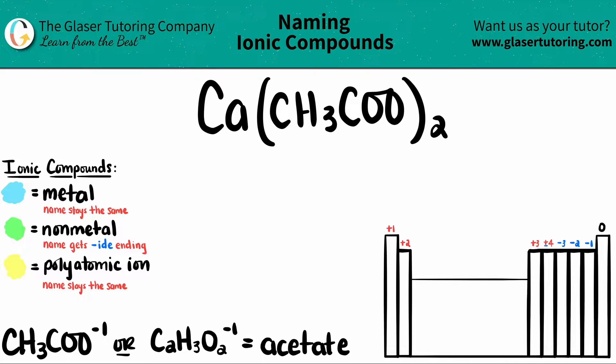Today, we are going to be finding the name of the ionic compound Ca(CH3COO)2.